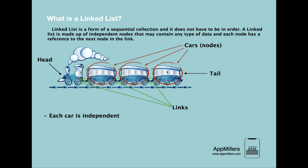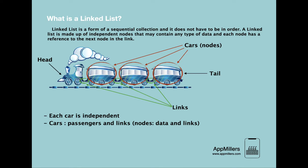As mentioned in the definition, each element of a linked list consists of two parts: data and a link to the next node. In the train, we can easily see that in each car there are passengers, and each car is linked to the next car. So it can be seen that the train satisfies all properties of linked list, and we can say that the train is a linked list.